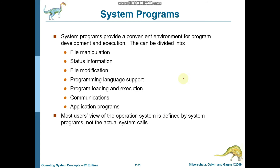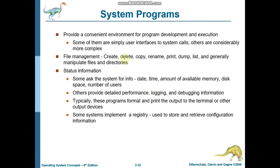Now we are going to discuss system programs. System programs provide a convenient environment for program development and execution. They are divided into: file manipulation, status information, file modification, programming language support, program loading and execution, communication, and application programs. An important point is that users view the operating system through system programs, not through actual system calls. System programs define the operating system from the user's perspective.